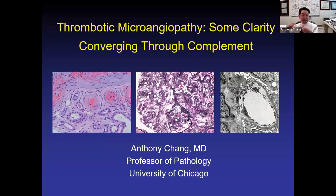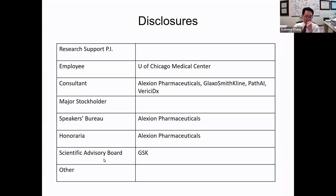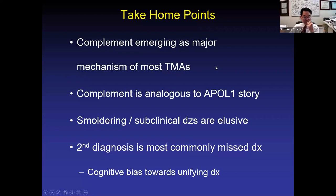It doesn't matter how long we stare at the biopsy — we can't tell you what the etiologies are. But as I've actually thought about this disease a lot, mostly because of a conflict of interest with Alexion Pharmaceuticals — I give a lot of talks for them regarding helping make the diagnosis of thrombotic microangiopathy — it's really allowed me to hone my thought process. Complement really is the major mechanism connecting all of these different clinical pathologic entities associated with thrombotic microangiopathy. Other than TTP, once you rule out TTP, I now believe that everything else probably is related to complement.